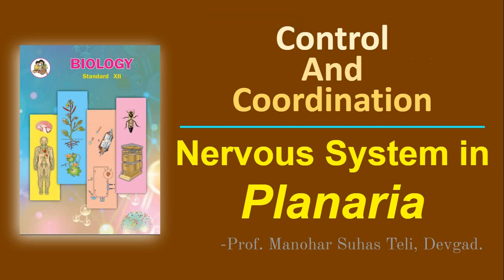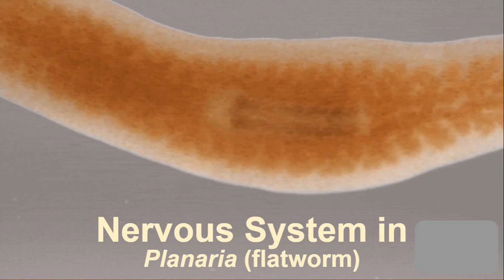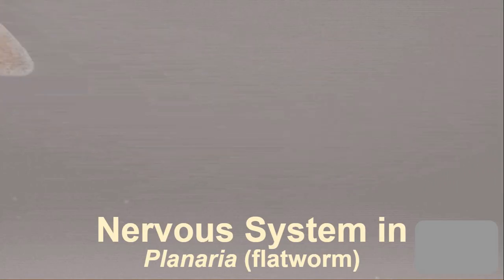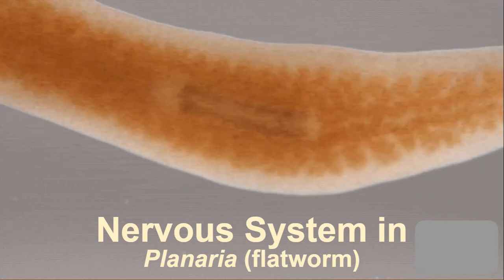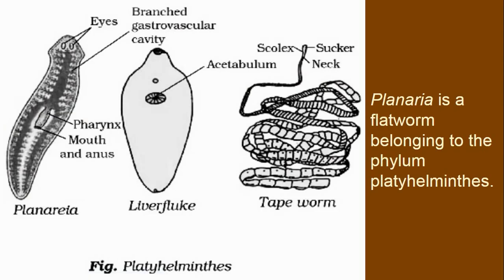In this topic we are going to learn about the nervous system in Planaria. Planaria is a flatworm belonging to phylum Platyhelminthes. In this phylum all the members are flat in their body structure. For example, liver fluke, tapeworm, and planaria are organisms in this phylum.